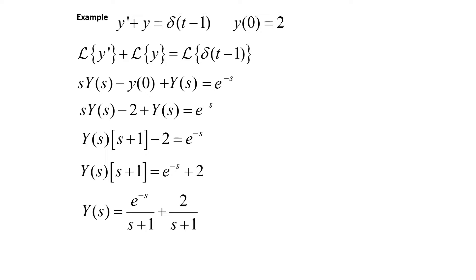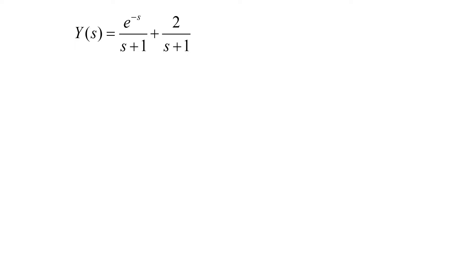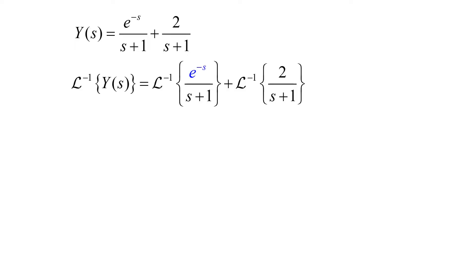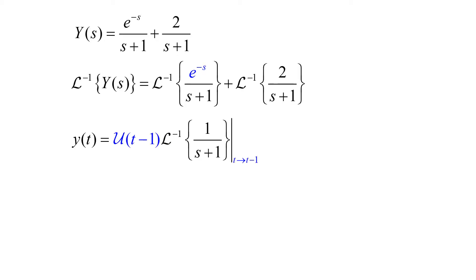Now that we have Y(s) by itself, we need to take the inverse Laplace transform. So the inverse Laplace of Y(s) equals the inverse Laplace of e to the negative s over (s plus 1), plus the inverse Laplace of 2 over (s plus 1). The inverse Laplace of Y(s) will be little y(t). Again, we see that exponential in s, so that tells us to use our second translation theorem. We're going to have u(t minus 1) times the inverse Laplace of 1 over (s plus 1), translated from t to t minus 1. And the inverse Laplace of 2 over (s plus 1) is 2e to the negative t.